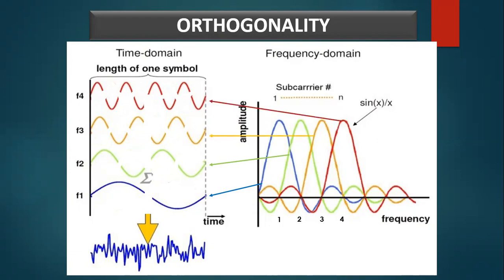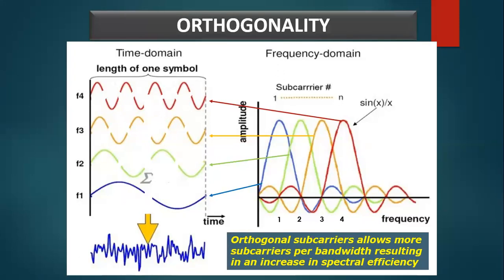In the frequency domain, when we look at the sinc function spectrum of this time domain signal, it produces overlapping spectra between the sub-carriers. At orthogonal frequencies, the individual peaks of the sub-carriers are aligned with the nulls of the other sub-carriers. The use of orthogonal sub-carriers allows more sub-carriers per bandwidth, resulting in increased spectral efficiency. In a perfect OFDM signal, orthogonality prevents interference between overlapping sub-carriers.